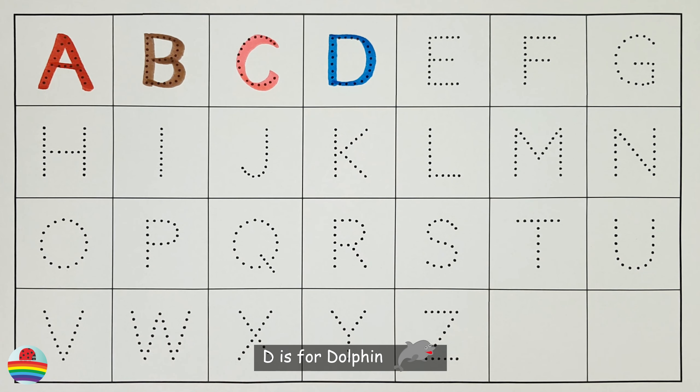D is for dolphin. E is for eagle. F is for flamingo.